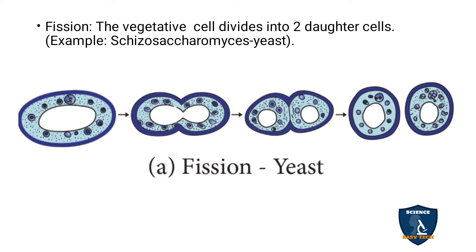Fission: the vegetative cell divides and produces two daughter cells. That is called fission, and it is seen in Schizosaccharomyces yeast. The vegetative cell divides to produce two daughter cells.